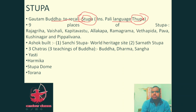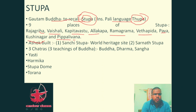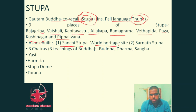There are nine places associated with Buddha's life where stupas were built: Rajagriha, Vaishali, Kapilavastu, Allakappa, Ramagrama, Vethadipa, Pava, Kushinagar, and Pippaliwana. Ashoka also built the famous Sanchi stupa, which is a UNESCO World Heritage Site.